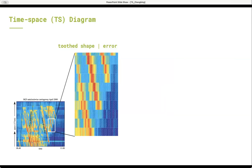However, when we zoom in the diagram, we will see it usually shows teeth shape, which is obviously inconsistent with real-world traffic and looks ugly. In other words, the time-space diagram itself is with a lot of errors.